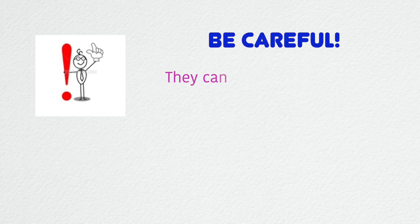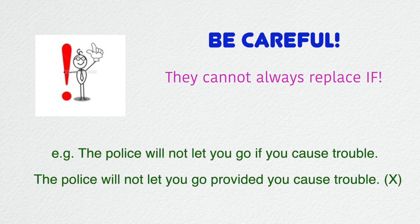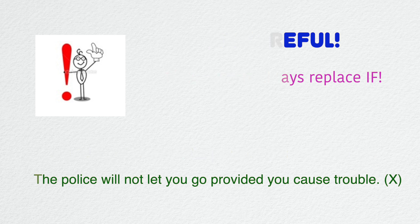But be careful. We use these conjunctions to emphasize that the condition is necessary to the result — the part of the sentence starting with these words expresses a condition that must exist for the result to happen. They all mean 'if and only if,' which is why they cannot always replace 'if.' For example: 'The police will not let you go if you cause trouble' versus 'The police will not let you go provided you cause trouble.' The meaning changes — in the second example, we can't use 'provided' here because causing trouble is not a condition that needs to be present.